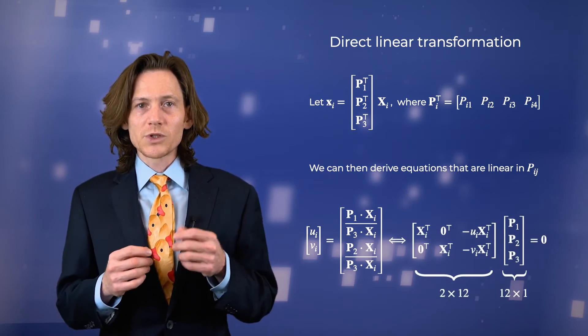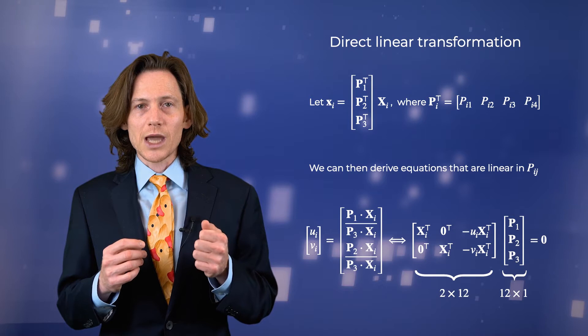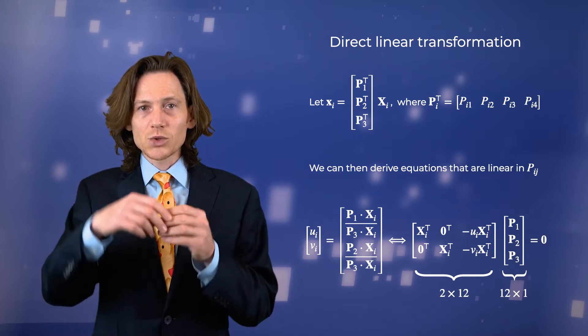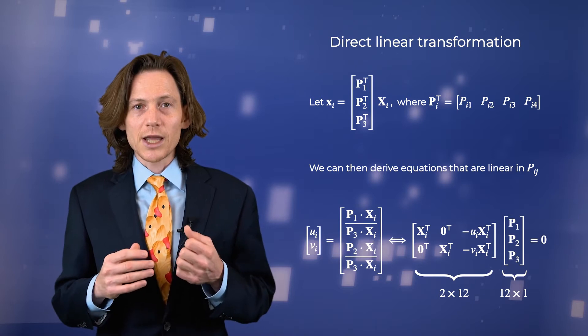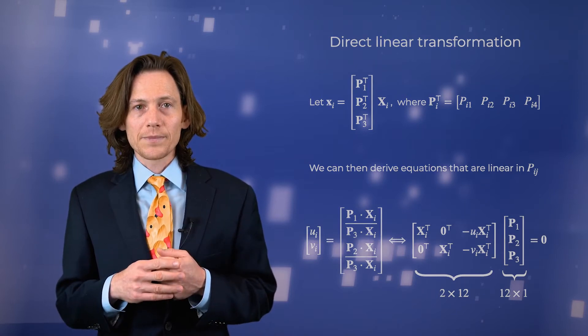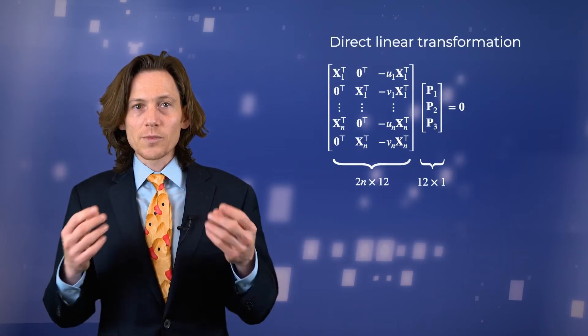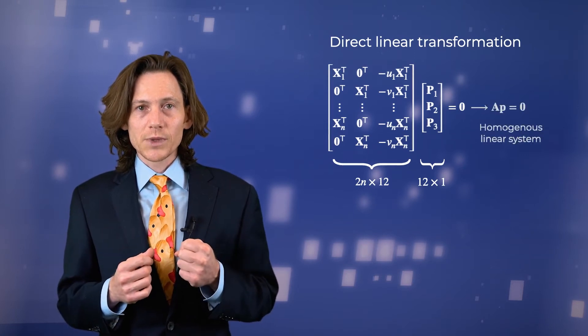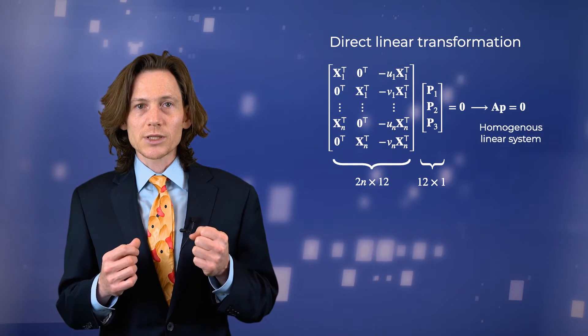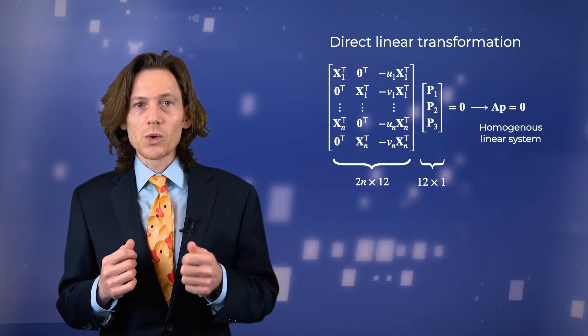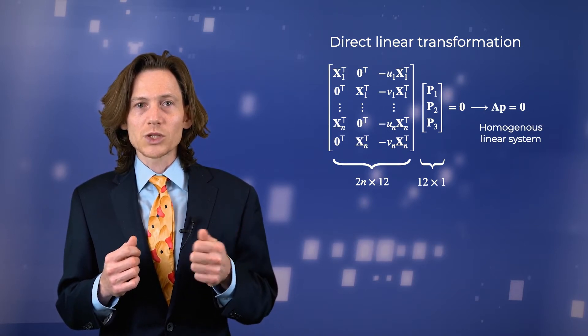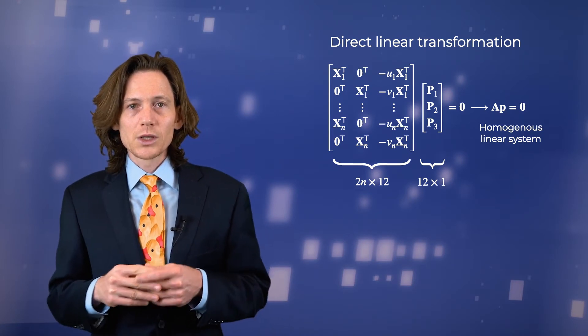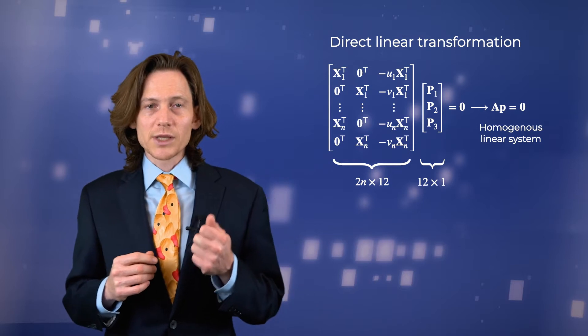Rearranging terms gives us a system of two equations that are linear in the entries of the camera matrix, which we can express as the product of a two-by-twelve matrix and a twelve-dimensional vector. Adding the other point pairs, we get a system of two times n linear equations. This corresponds to a homogeneous linear system, A times P equals zero, where A is a matrix with two times n rows and twelve columns, and P is the vector of camera matrix parameters. We can identify the camera matrix by solving this linear system.